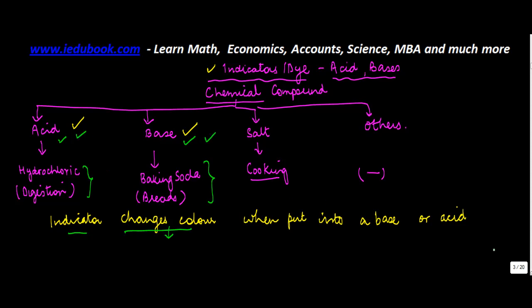Indicators are classified into two categories. One type is natural indicators, and the other is synthetic indicators. Synthetic denotes what has been developed by mankind.